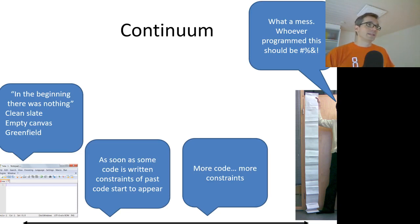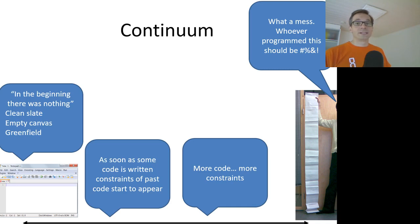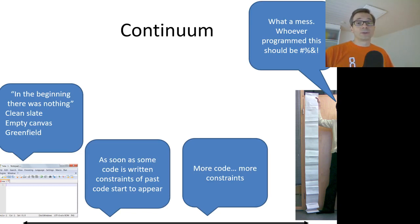We can see in this figure that on the left we have an empty editor with no source code in it. We may refer to this situation with the following phrases: in the beginning there was nothing, clean slate, empty canvas, green field. As soon as some code is written, constraints of past code start to appear.